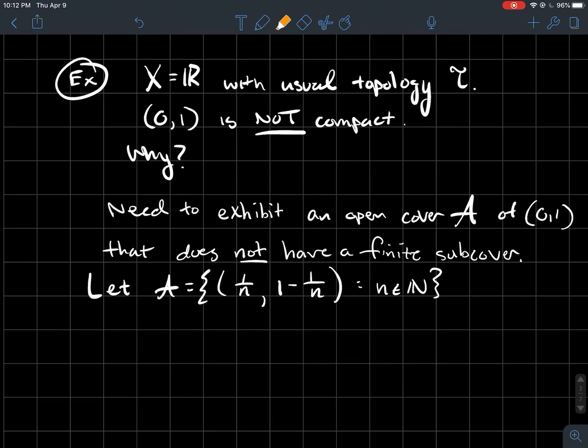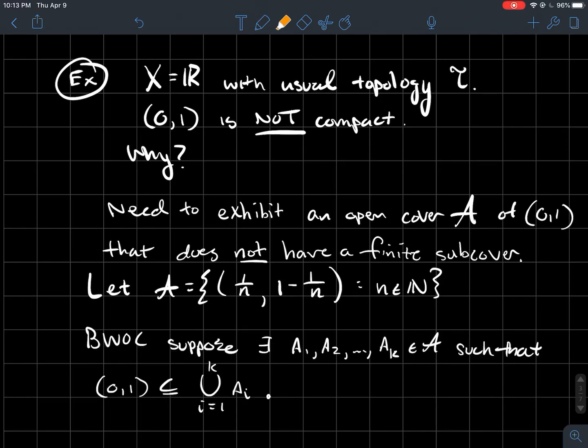This is similar to the cover we talked about in the beginning of the video. Let A be the collection of all sets whose left endpoint is 1 over N and whose right endpoint is 1 minus 1 over N. Then I claim that there is no finite number of these sets. There would be enough to cover 0 to 1. I would need to use infinitely many of these sets in order to cover 0, 1.